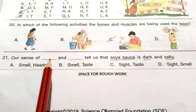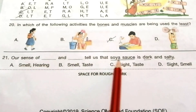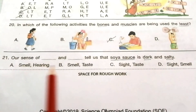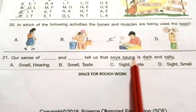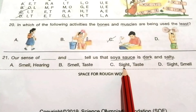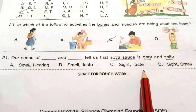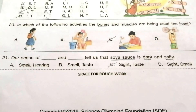Question 21: Our senses of sight and taste tell us that soya sauce is dark and salty. Read the given options and find the answer. Soya sauce is dark, so color is related to sight. Salty is related to taste. So the answer is C — Sight and Taste.